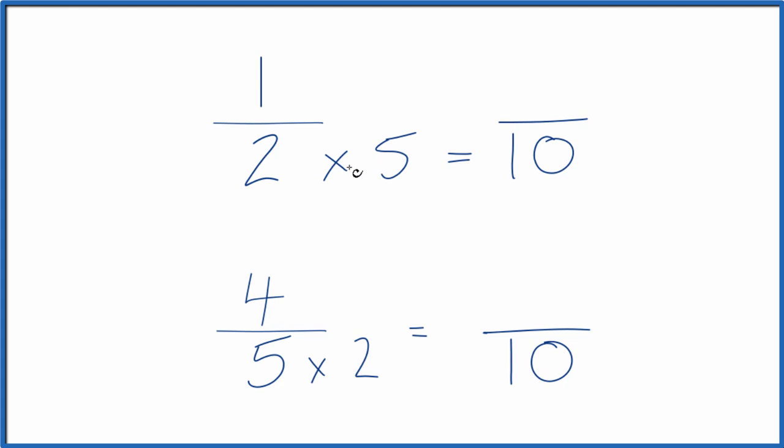But we can't just multiply the denominator by five. We also have to multiply the numerator times five. That's because five over five, that's just one. So we're multiplying by one. We're not changing the value, just the way it's represented. One times five is five. And five-tenths, that's the same thing as one-half. They both equal the decimal 0.5.